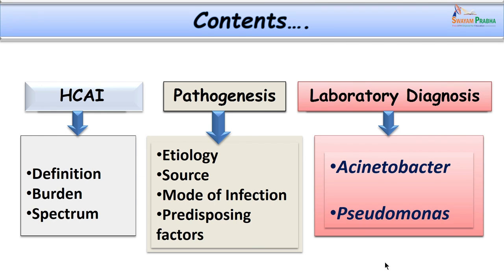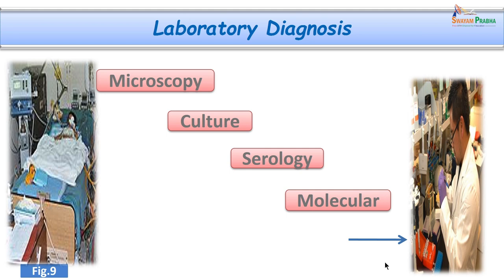After covering pathogenesis — including etiology, modes of infection, sources, and predisposing factors — let us consider laboratory diagnosis, focusing on the two non-fermenters. Laboratory diagnosis involves microscopy, culture, and optionally serological and molecular tests. Serological and molecular methods have less direct therapeutic implication but are useful for academic interest — for typing organisms and studying resistant genes, as well as for infection prevention and control such as phage typing.